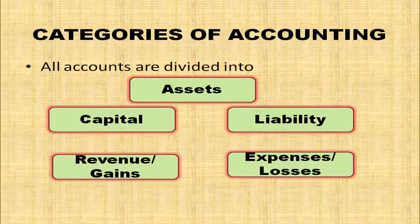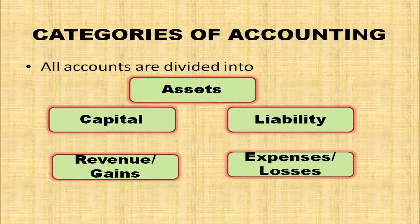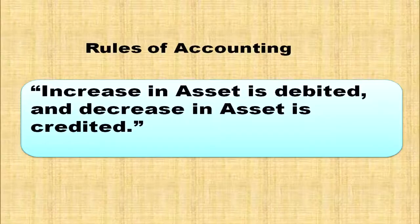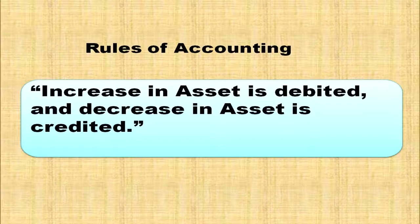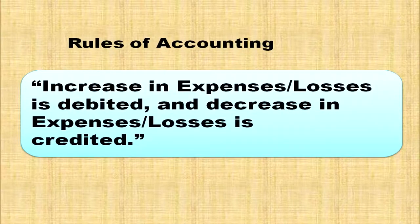We have already studied classification of accounts, but I am going to repeat it. We have different types of accounts like assets, capital, liability, revenue or gains, and expenses or losses. Modern rules of accounting: Increase in asset is debited and decrease in asset is credited. Increase in expenses or losses is debited and decrease in expenses or losses is credited.